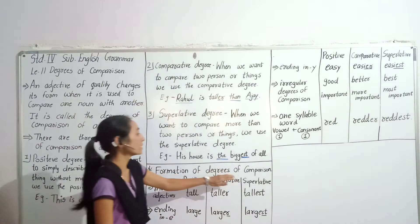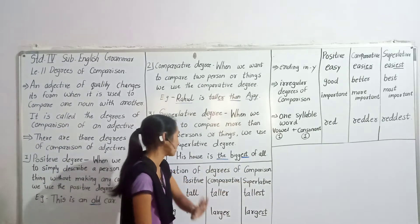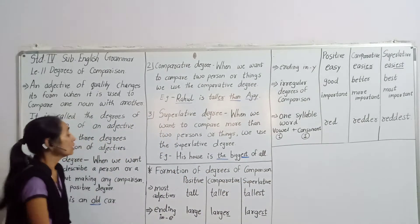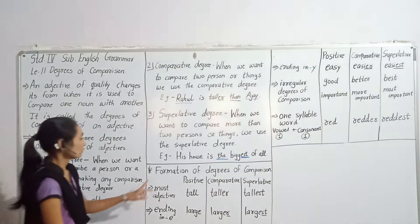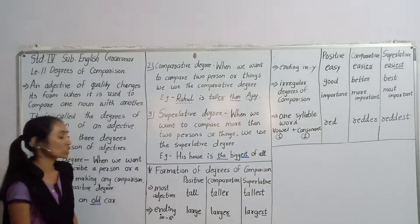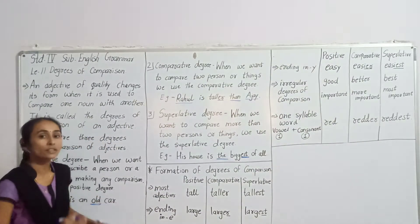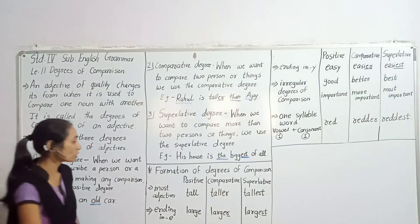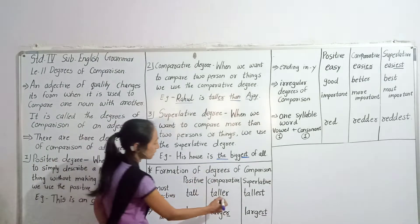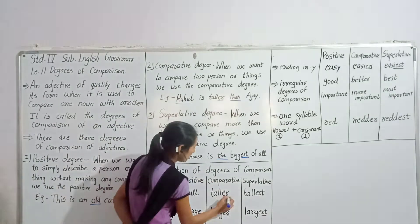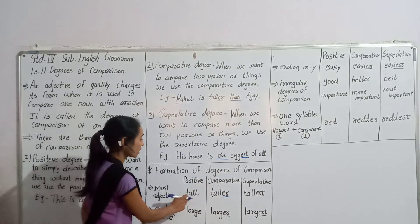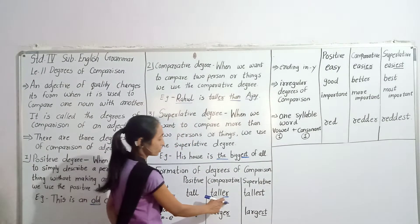Formation of Degrees of Comparison — rules. So what are the rules? First: most adjectives. For most adjectives, in comparative degree we add '-er', and in superlative degree we add '-est'. Like: tall — comparative degree is taller, superlative degree is tallest.